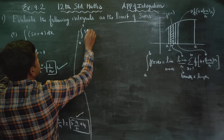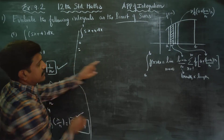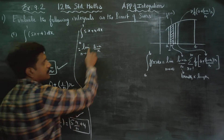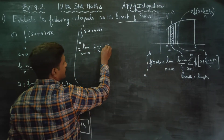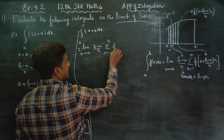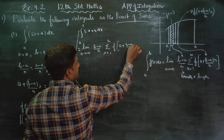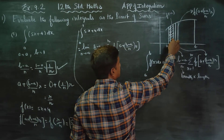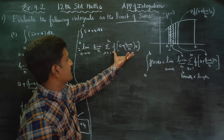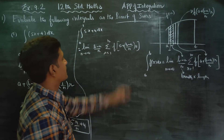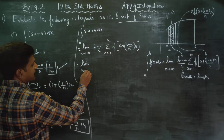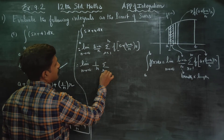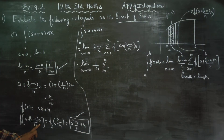The integral from 0 to 1 of (5x + 4) dx equals the limit as n turns to infinity of b minus a by n times sigma from r equals 1 to n of f(a + (b minus a)/n into r). Substituting: limit n turns to infinity of (1/n) times sigma r equals 1 to n of (5r/n + 4).